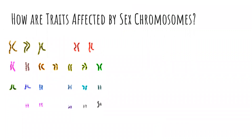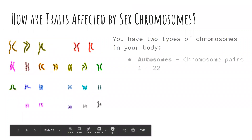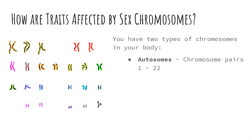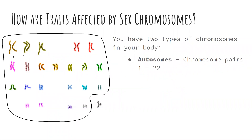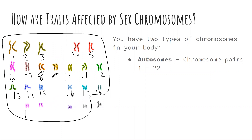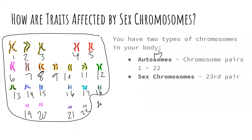How are traits affected by sex chromosomes? You have two types of chromosomes in your body. Your autosomes are chromosome pairs one through 22 and control all life processes not involving sex determination. The 23rd chromosome pair controls your sex — whether you're male or female. If you have XX, you're a genetic female. An X chromosome is a long chromosome. A genetic male has XY chromosomes — a long X and a short Y.